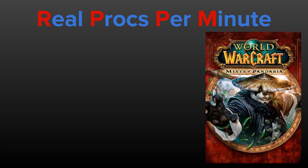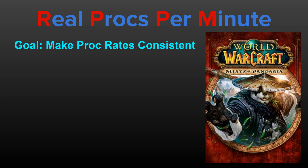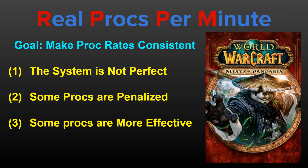The goal of this system is that if you have a proc effect that is advertised to proc two times per minute, then it should, in fact, proc two times a minute. That said, there are some nuances to this system that can cause these proc rates to trigger more or less often than is advertised. The goal of this video is to inform people of these details so they can make better decisions when it comes to these types of effects, especially effects that might not perform as well in reality. It will also share the relevant formulas for those interested in the mechanical side of things.